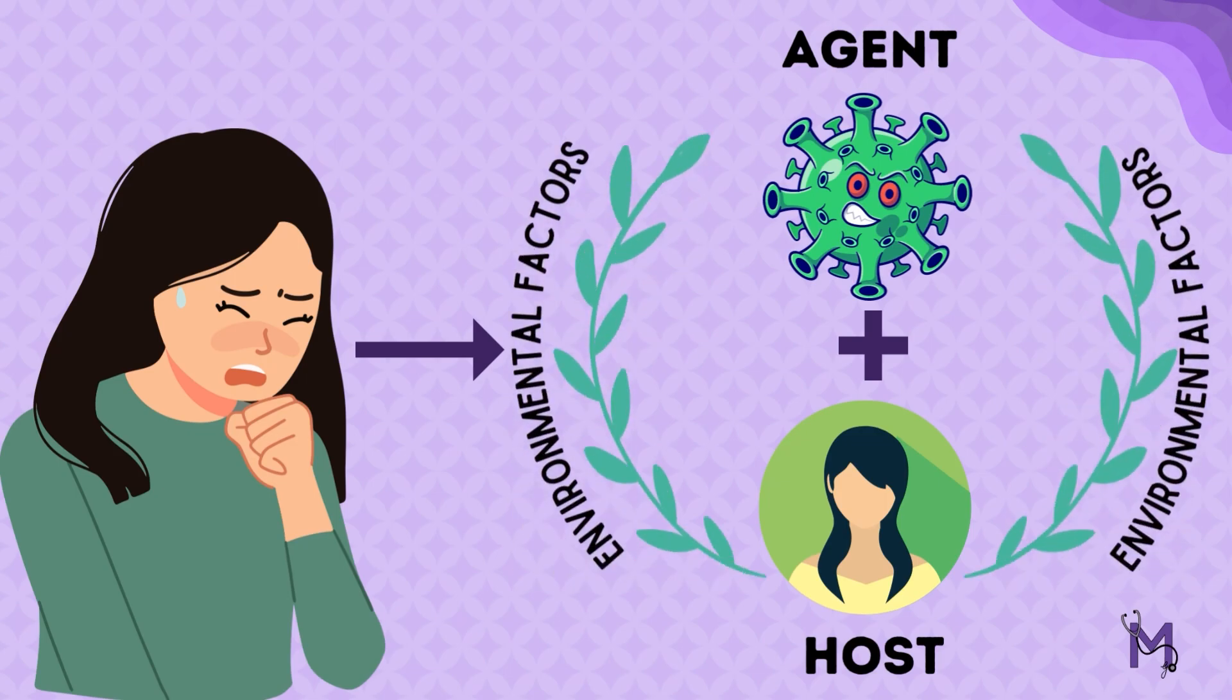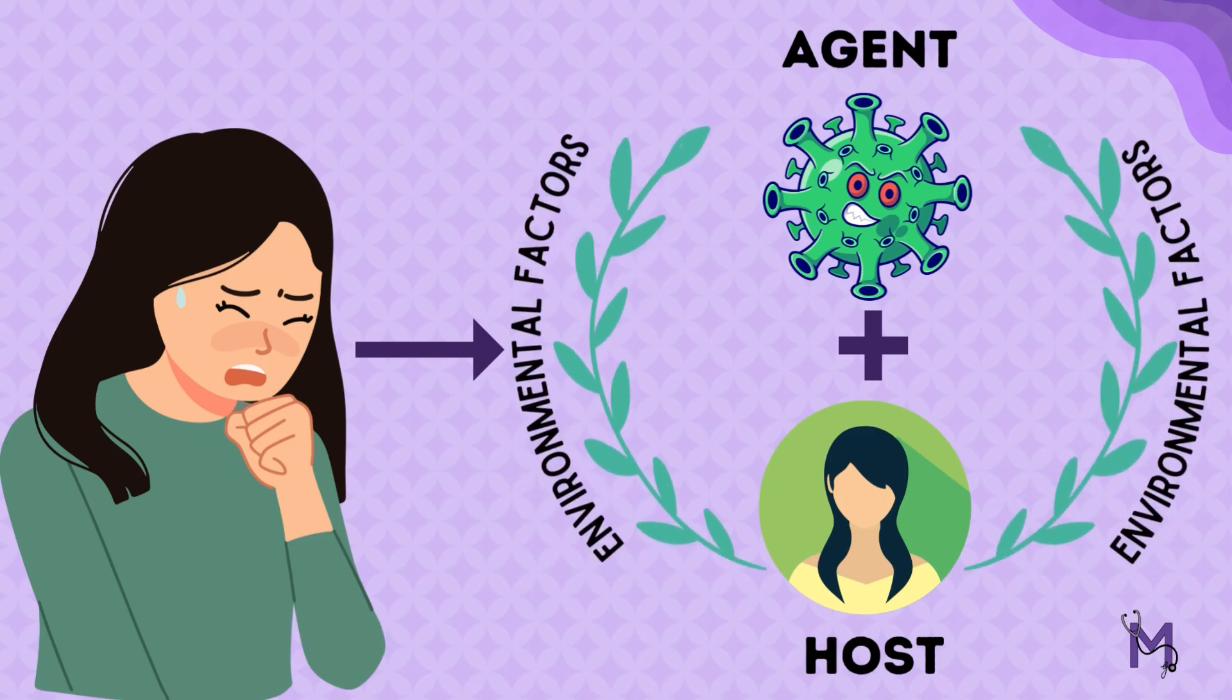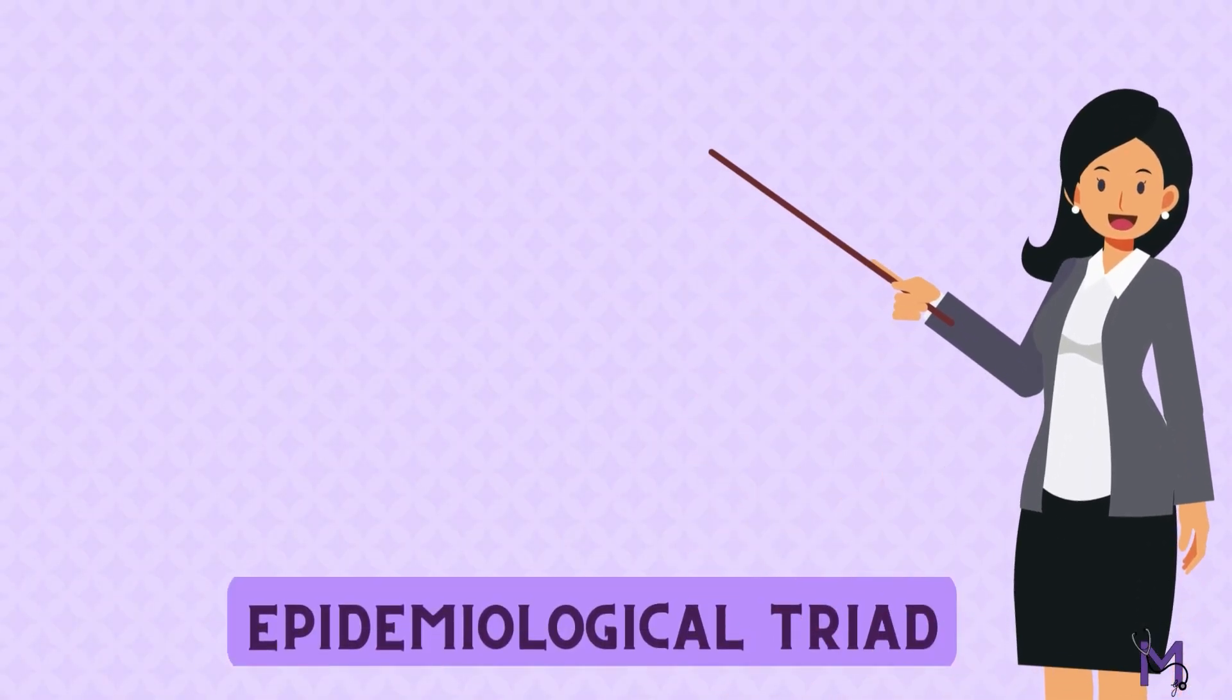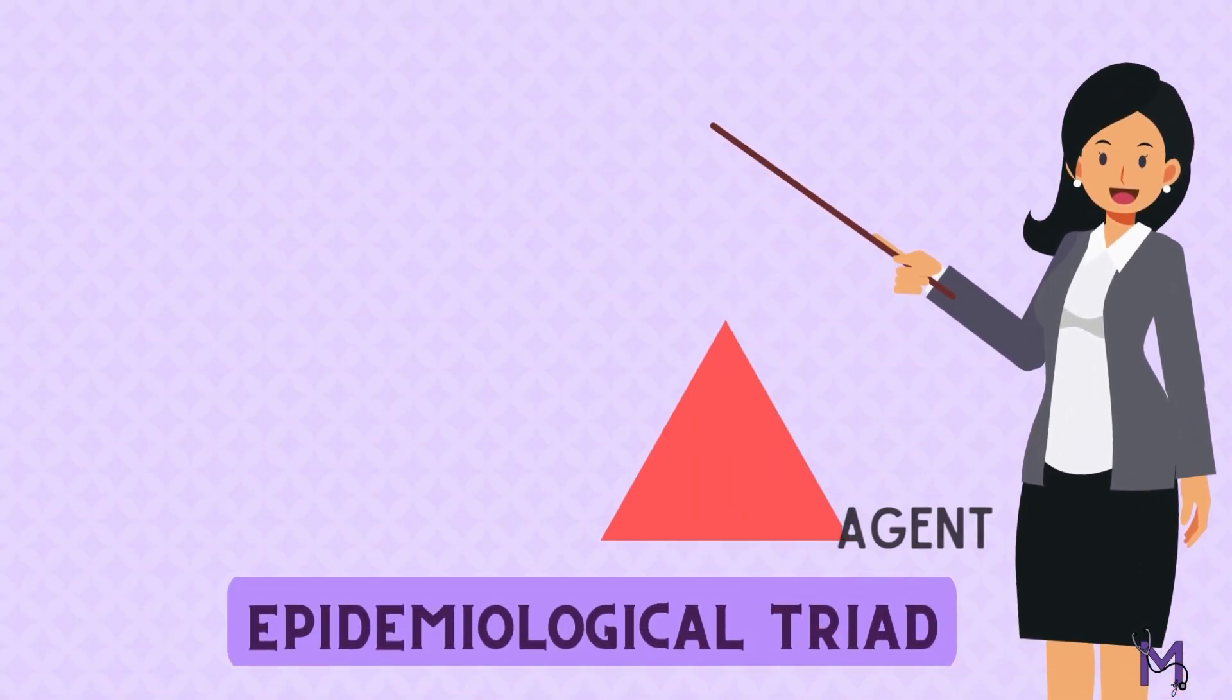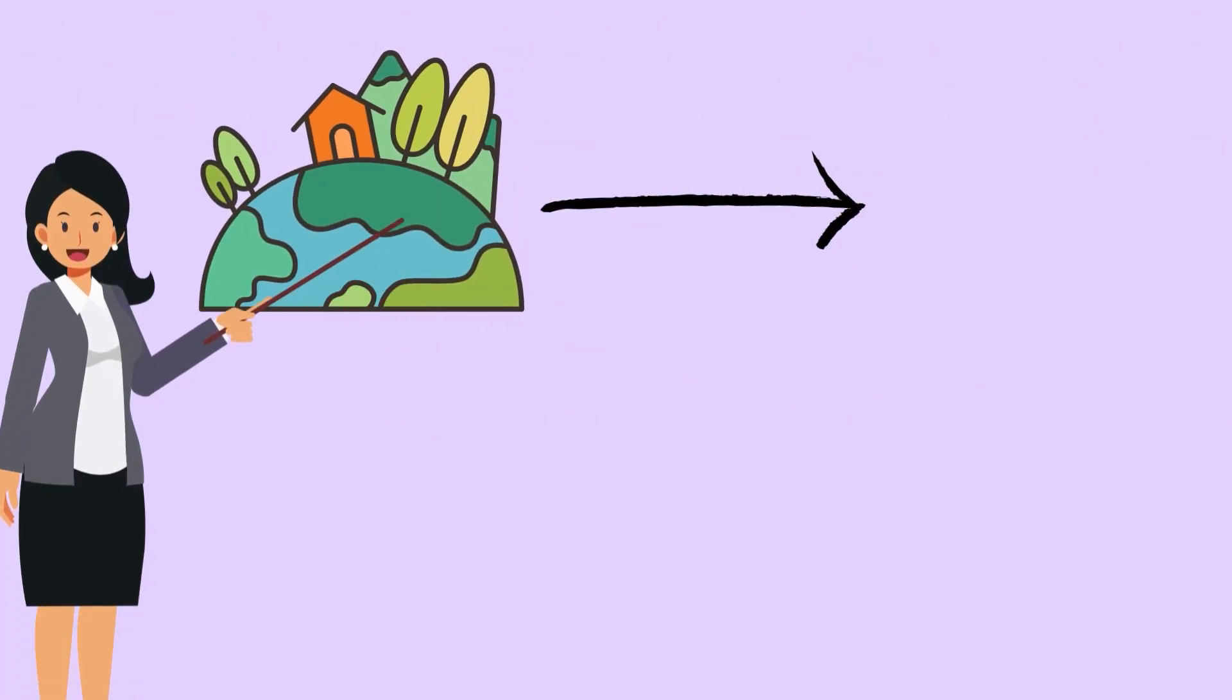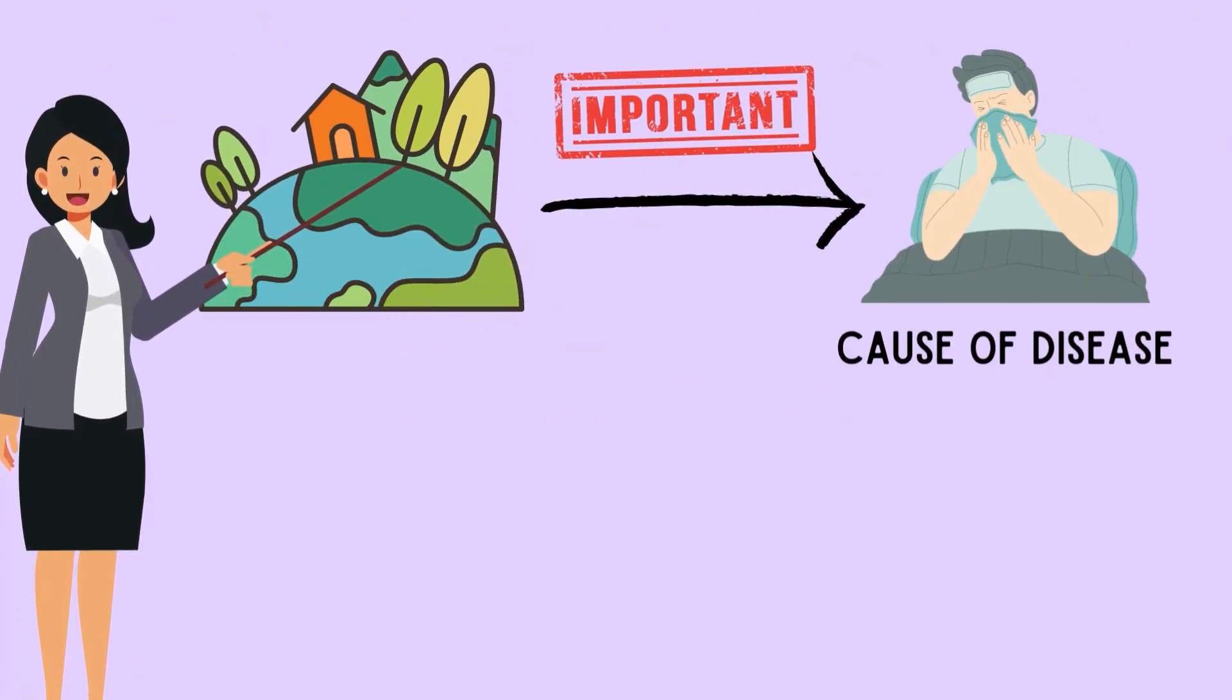The triad, as you can see in the image, has the agent, host, and environment at the vertices of an equilateral triangle. Notice how the environment is at the tip of the triangle - environment plays a pivotal role in the causation of a disease.